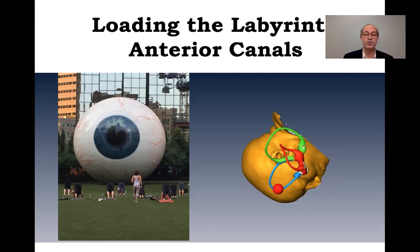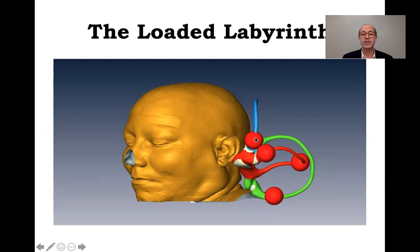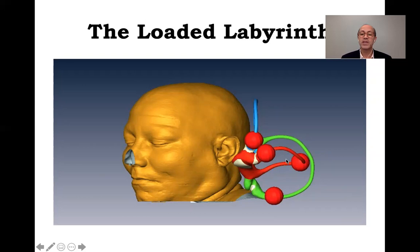In the loaded labyrinth: in the anterior canal, the otoliths end up on top of the ampulla; in the posterior canal, they end up about 30 degrees behind the crista and ampulla; and in the lateral canal, there are two separate positions where otoliths end up. There is an anterior and a posterior inflection caused by the bent toroidal shape of the lateral semicircular duct. Otoliths trapped between the anterior inflection and the crista give patients apogeotropic lateral canalolithiasis. More commonly, otoliths are in the intermediate segment between the anterior and posterior inflection, giving geotropic lateral canalolithiasis.